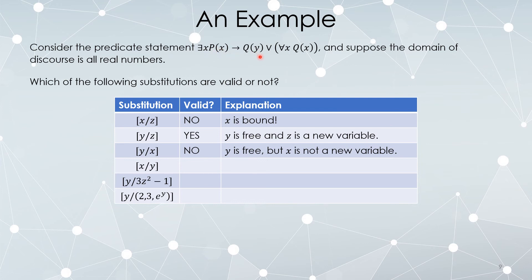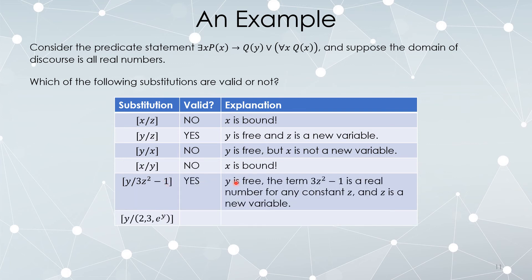Any variable you use when you substitute into a free variable has to be entirely new. Can I replace every instance of x with y? No — x is a bound variable. Can I replace every instance of y with the term 3z squared minus 1? Yes — y is a free variable and 3z squared minus 1 only involves the variable z, which is entirely new.